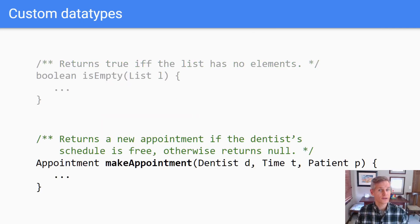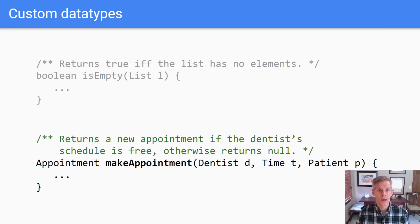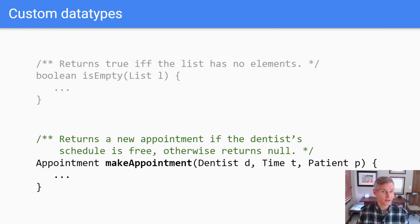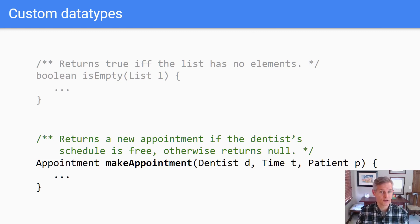Before today, you've seen contracts in simple data types like list and stack — that's the example you just saw. You may not have seen them in your own code or on custom data types, but as it turns out, contracts work great on custom data types, just like they do on primitive ones.